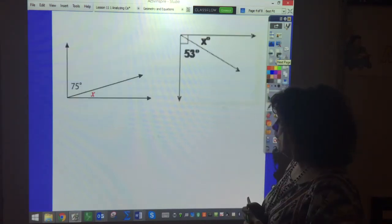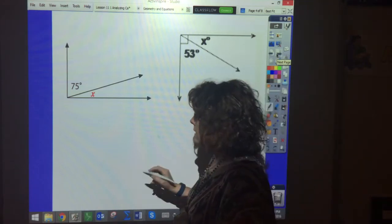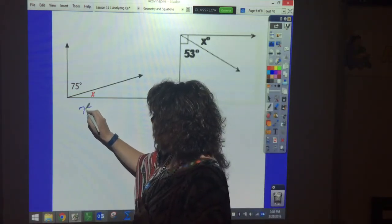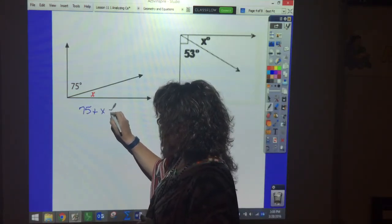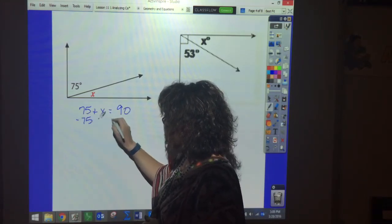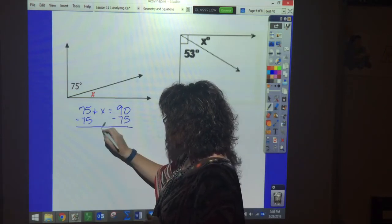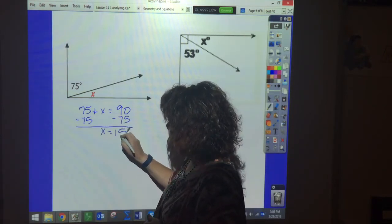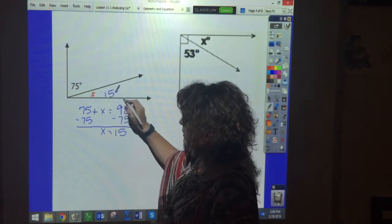So again, you can probably in your head do this but let's set it up. So 75 plus X equals what? 90. And so subtract 75, subtract 75 and X equals 15. So this is 15 and it looks like it's 15.